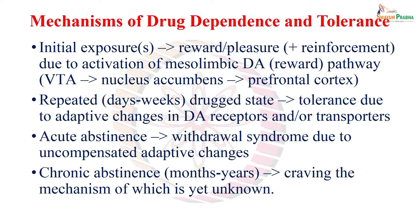The mesolimbic pathway extends from the ventral tegmental area in the midbrain to the nucleus accumbens to the prefrontal cortex. This is a dopaminergic neuron, so when it is activated there is release of dopamine at the nucleus accumbens and in the prefrontal cortex. When I repeatedly take the drug over days and weeks, I develop tolerance — I am not getting enough response because of adaptive changes in the dopamine receptor and dopamine synthesis.